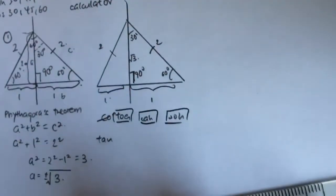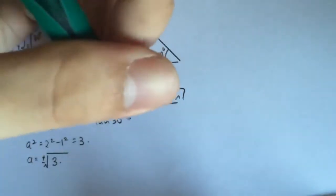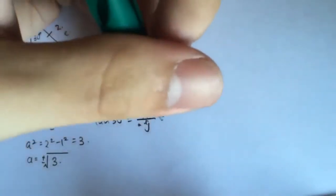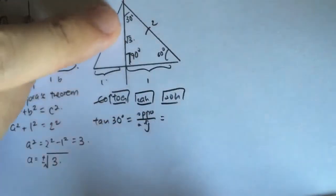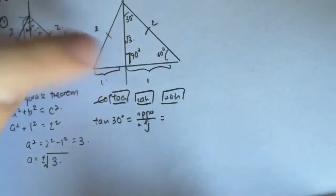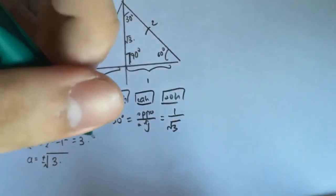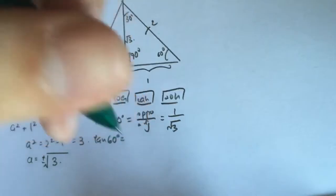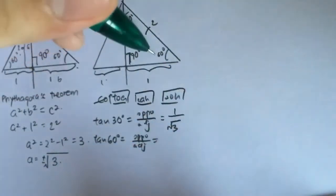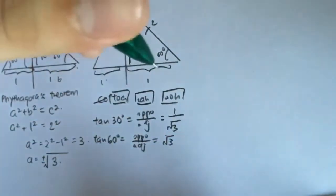Using the SOH-CAH-TOA method: tangent 30 gives you opposite over adjacent. The opposite is 1 unit and the adjacent is square root 3, so tangent 30 equals 1 over square root 3. For tangent 60, it's also opposite over adjacent — the opposite is square root 3 and the adjacent is 1, so tangent 60 equals square root 3.